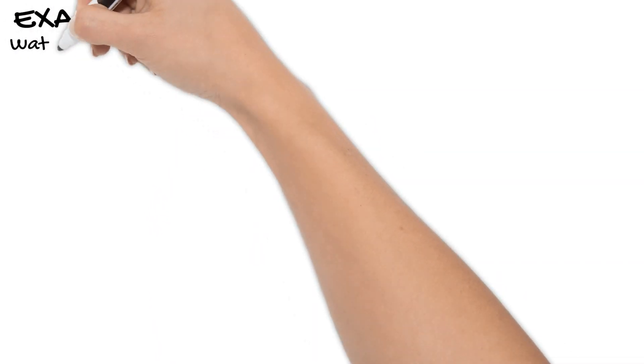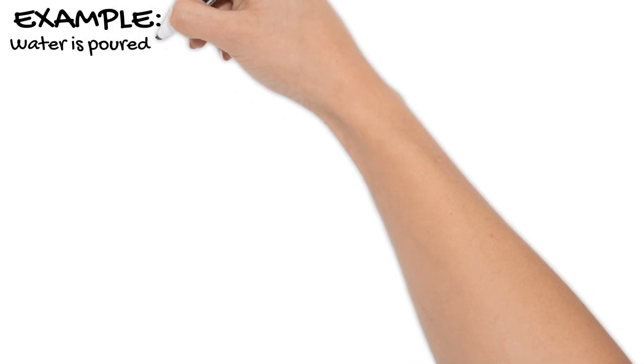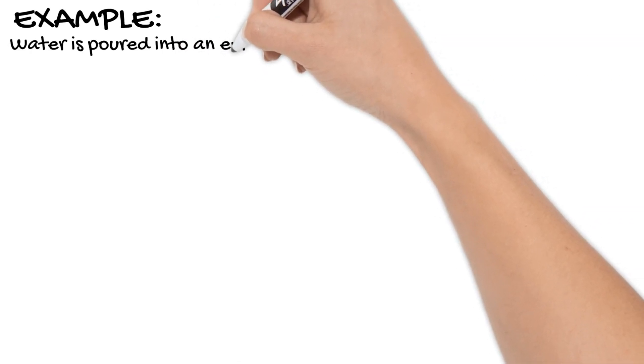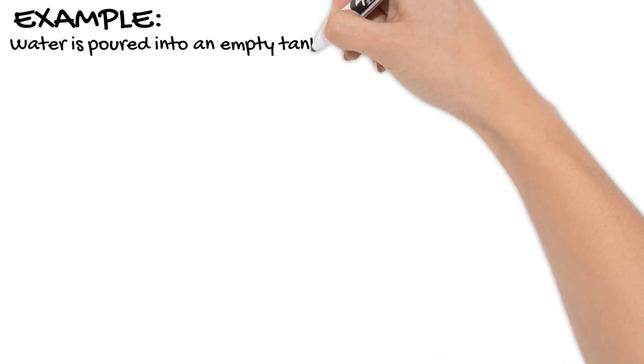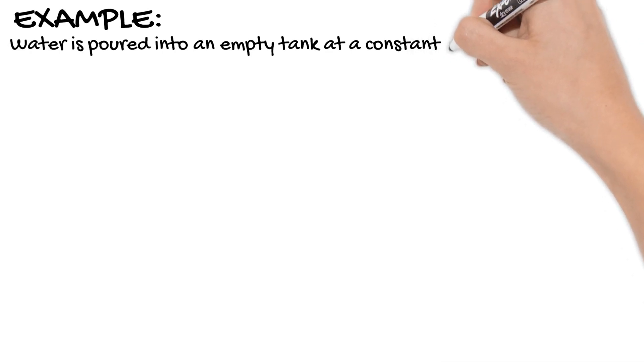So I just want to take you through an example of how to answer a question relating to direct proportion, because it's not always going to be clear that we are talking about direct proportion. You need to look for really specific language, like something's being filled at a constant rate or a certain event is happening at a constant rate. Now quite often these questions will have multiple parts, so it's important that you're able to give the right information with the right part.